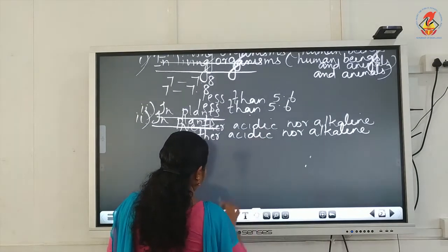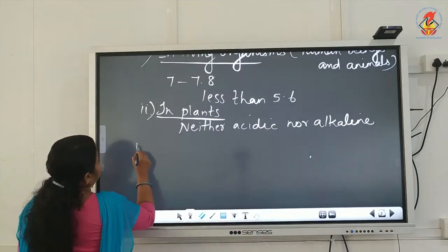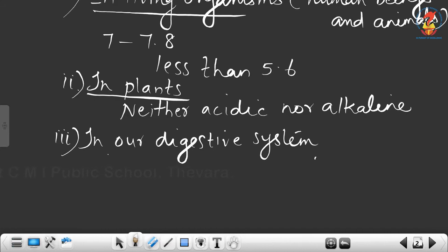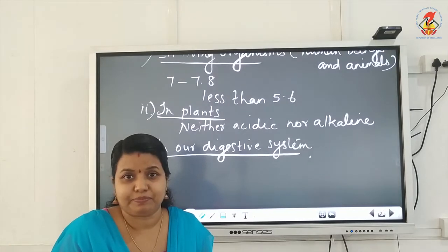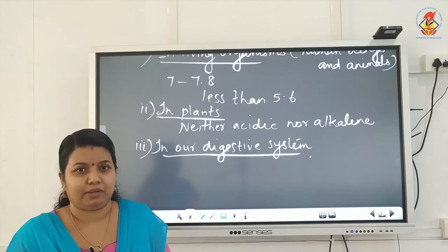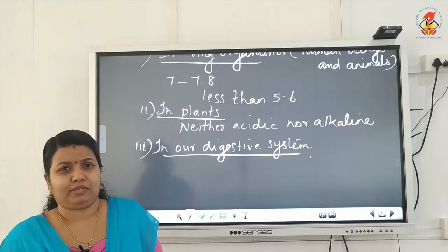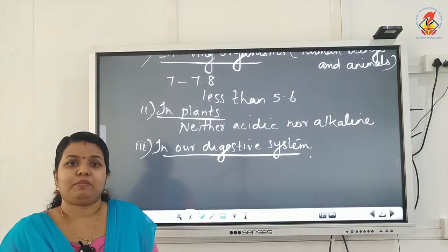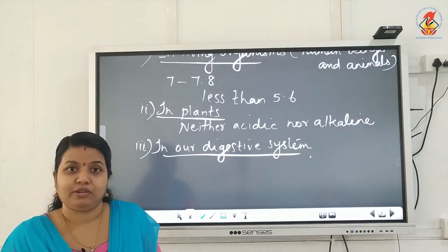The third point is the importance of pH in our digestive system. Our stomach produces a small amount of hydrochloric acid, which helps in the proper digestion of food. But sometimes due to indigestion or certain food items we eat, our stomach produces too much acid. We call it acidity — excess acid is produced in our stomach.